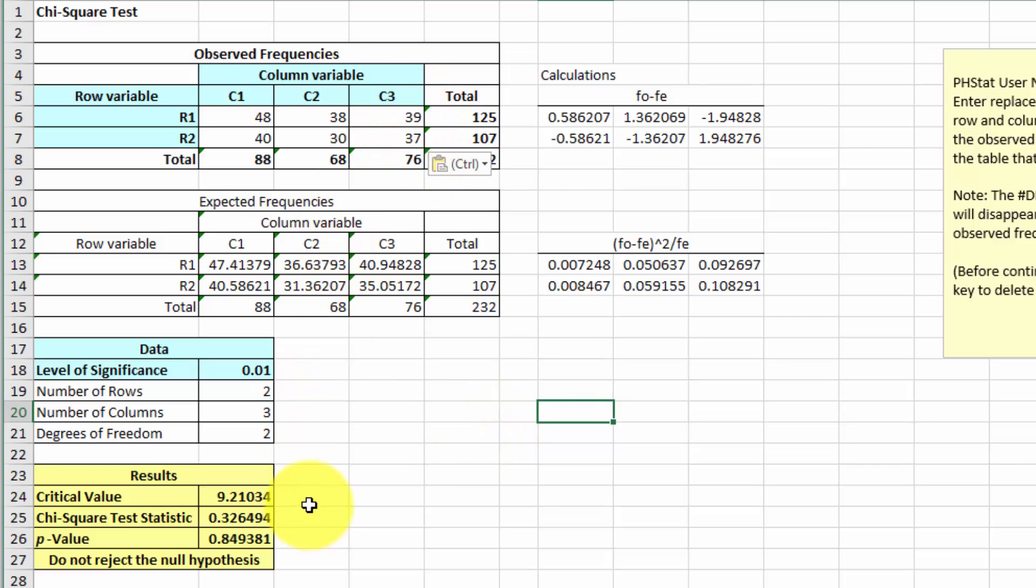And it does all the calculations. Down here are our answers. It gives us the critical value of chi-square of 9.21. We get a test statistic of 0.32 and a p-value of 0.894.